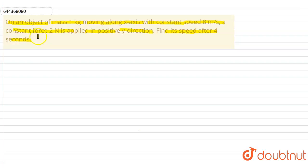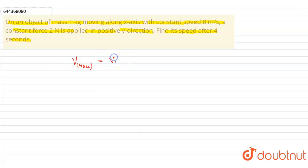We have to find the speed of the mass after 4 seconds. For finding speed, I am going to find the velocity of the mass after 4 seconds. So, velocity after 4 seconds equals velocity in the x direction after 4 seconds, and velocity in the y direction at 4 seconds.